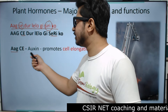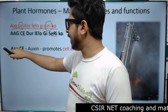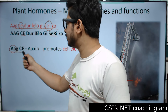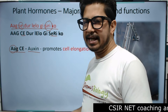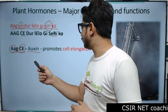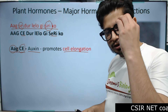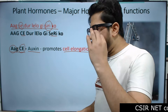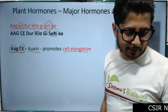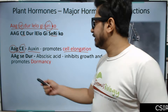Starting with 'A' and 'CE': 'A' is for Auxin, and 'CE' is for cell elongation. So the function of Auxin is to promote cell elongation.